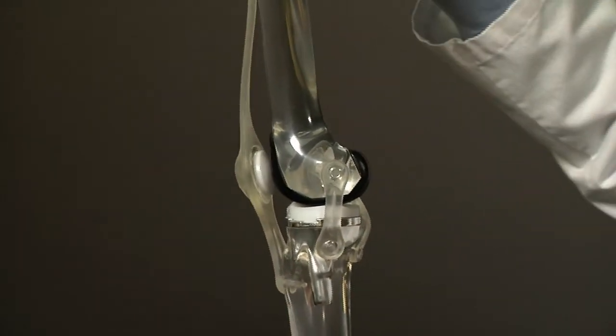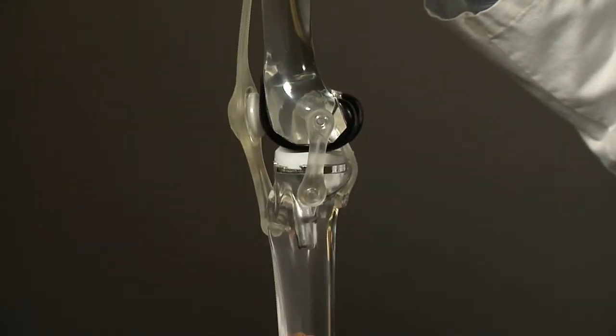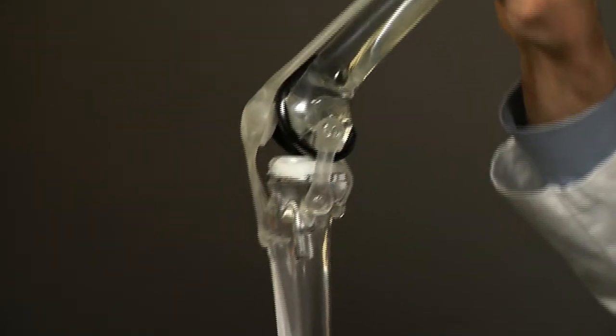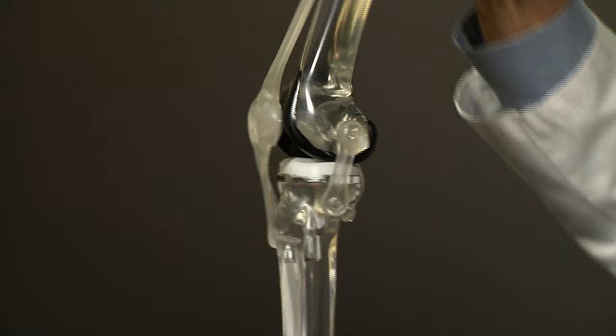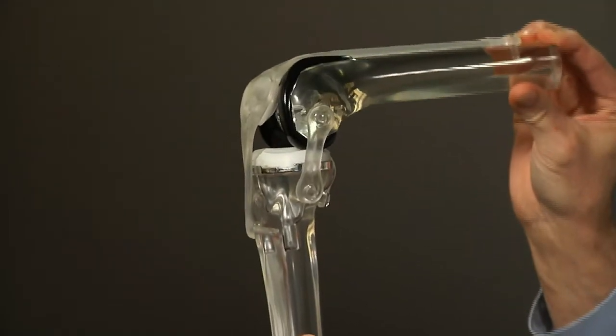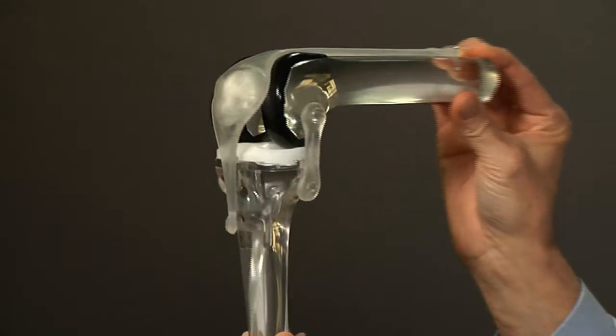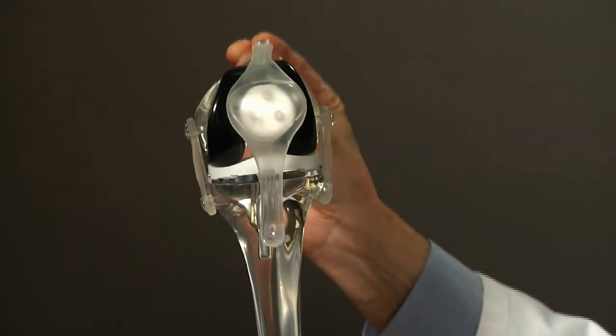As you stand, both bones are straight. Walking would be cycling through this range of motion, and when you go to sit down in a chair or a deep knee bend in that position.